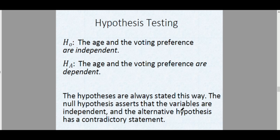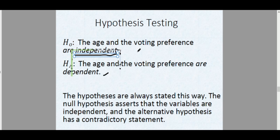Now for hypothesis testing, we start with our null and alternative hypotheses. The null hypothesis H₀ is always that the two variables are independent — in this problem, that age and voting preference are independent. The alternative hypothesis Hₐ is the opposite: that age and voting preference are dependent, meaning they are related. The null hypothesis is always independence; the alternative is always dependence.